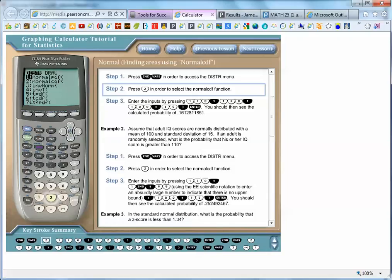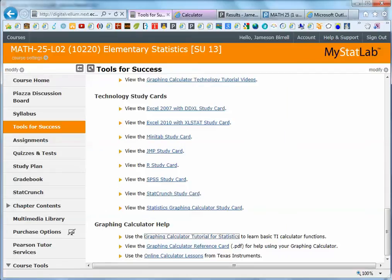Now, just to go back, that is, again, it's found in the Tools for Success folder. And your course may have a different color than mine. This one's the orange course, but it's in the Tools for Success. And it is the, down at the bottom, Graphing Calculator Tutorial for Statistics to Learn. Once you've learned and you just need quick reference, then use the Graphing Calculator Study Card.